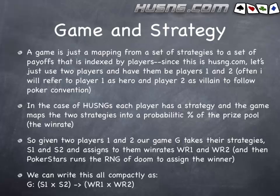Given players one and two, our game G takes their strategies S1 and S2 and assigns them win rates WR1 and WR2. Then PokerStars runs the random number generator to assign the winner. This is a really abstract take on the game — you take out all the little things happening inside the game and focus on the bigger picture: player one has some overall strategy, player two has an overall strategy, and those give some win rate. The RNG assigns the winner and our strategies give us win rates.